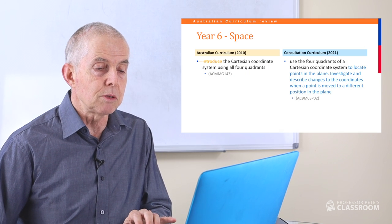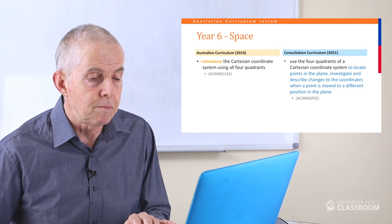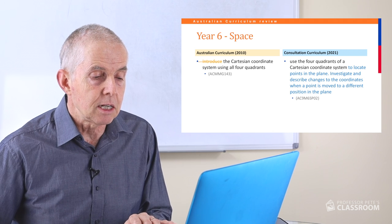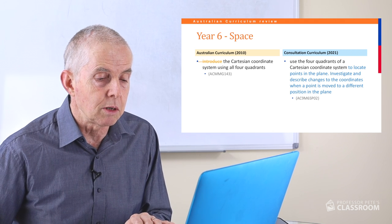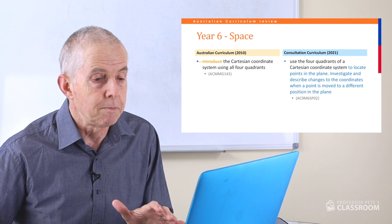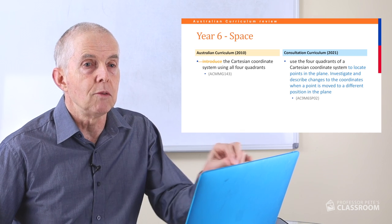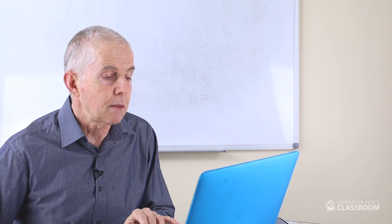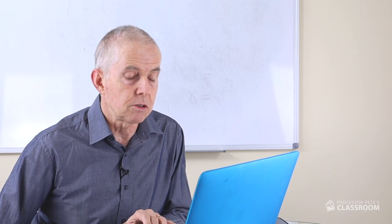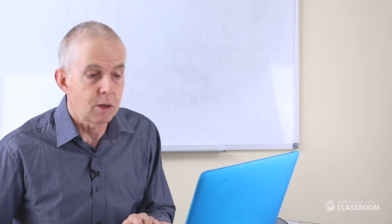The second space content descriptor says: use the four quadrants of a Cartesian coordinate system to locate points in the plane; investigate and describe changes to the coordinates when a point is moved to a different position in the plane. This is well done — it's not just locating points but asking what happens to the coordinates when you move in a particular direction. I think students will enjoy learning about points on a Cartesian plane.